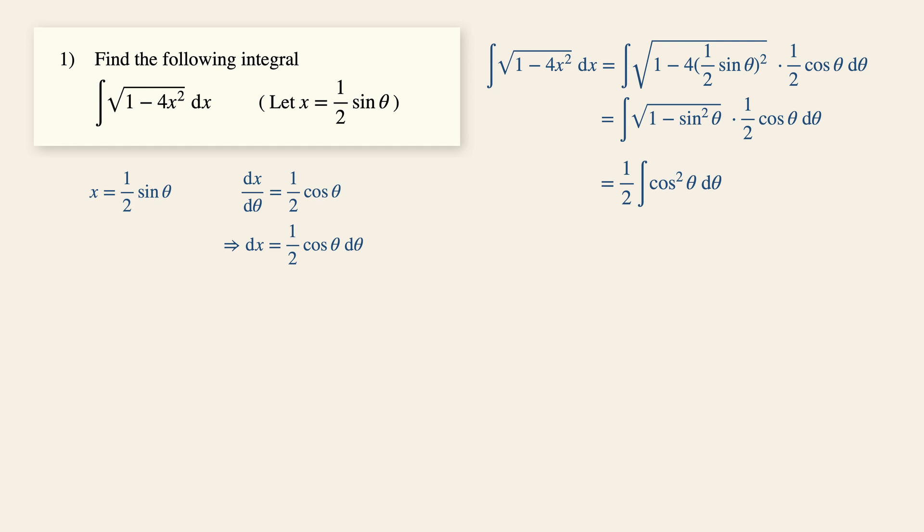I've basically changed 1 minus sine squared theta into cosine squared theta. And the square root of cosine squared theta is cosine theta. Multiplying that to cosine theta, we will then have cosine squared theta.